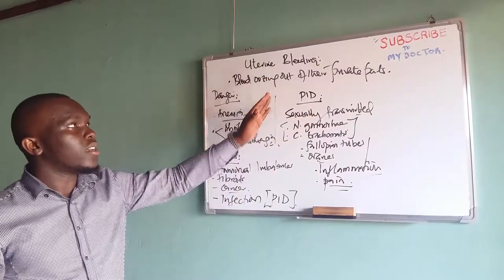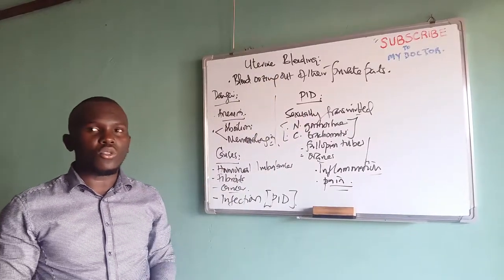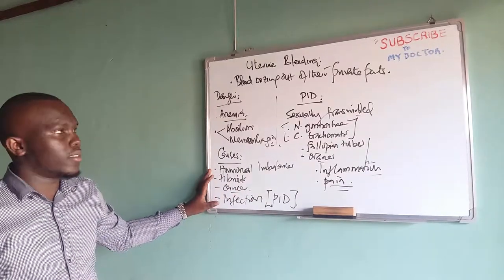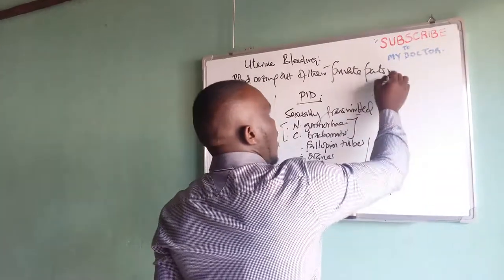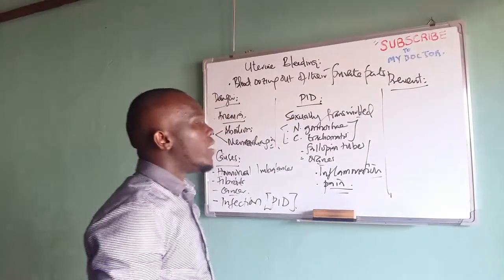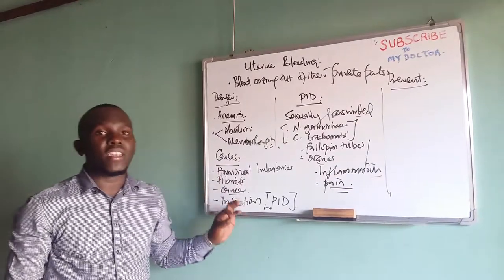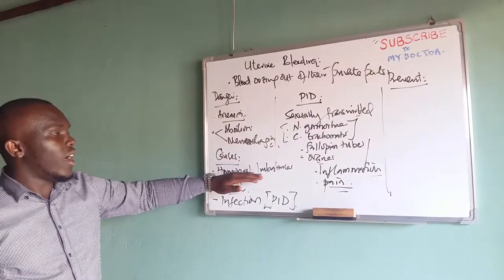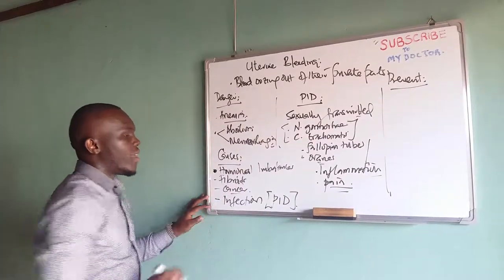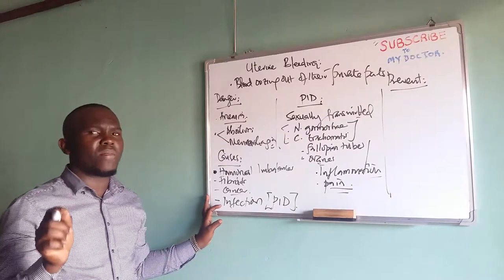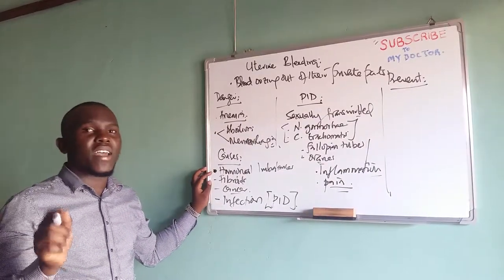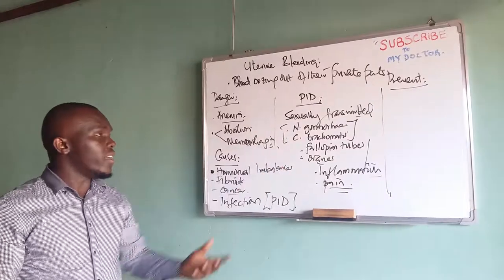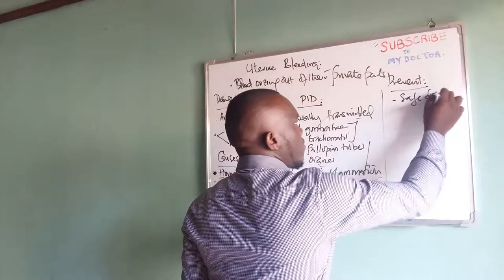When you see uterine bleeding, do not just think you have an infection — the problem can be due to very many causes. How can we prevent uterine bleeding? Number one, we talked about safe days, and by now most of you should know how to rely on your safe days. This avoids the biggest factor of hormonal imbalances, because so many cases of hormonal imbalances are present in people who rely on emergency contraceptives. When you rely on your safe days, you don't have that risk factor.